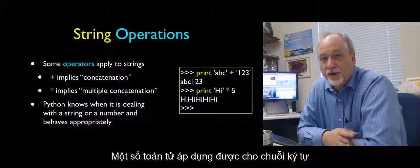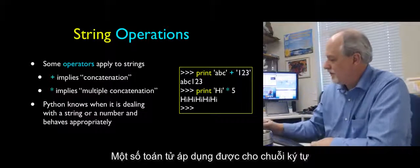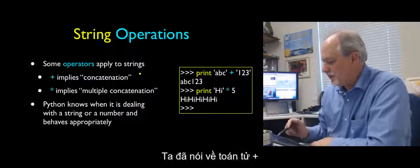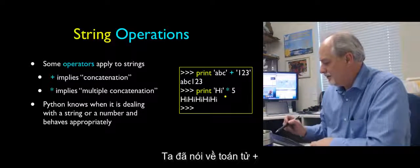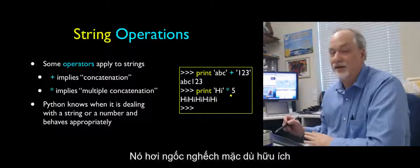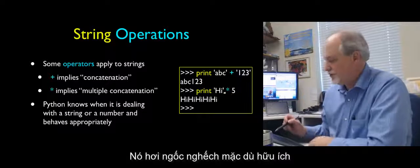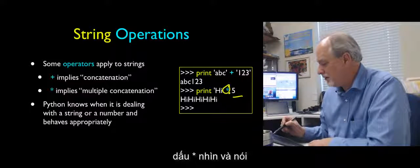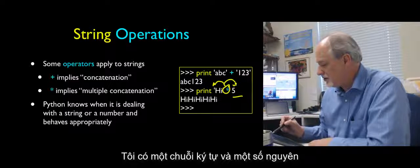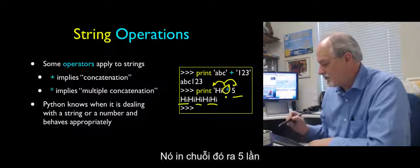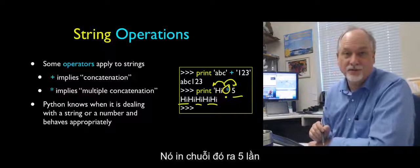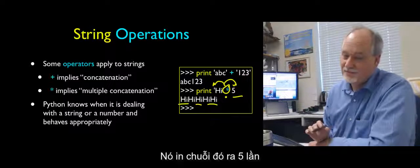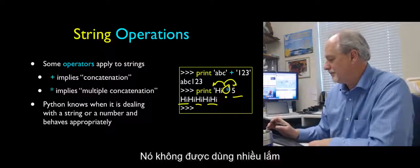Some operators also apply to strings. We've already talked about plus for concatenation. You can also multiply a string with the asterisk: given a string and an integer, it prints the string that many times. Not a lot of use for that, but it exists.